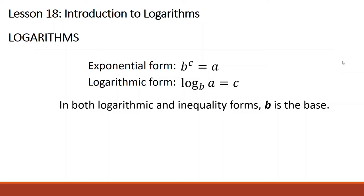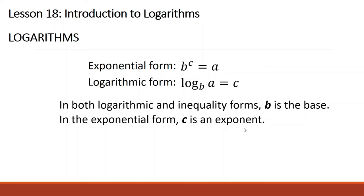In both logarithmic and exponential forms, b is always the base. In exponential form, c is the exponent. The result of the logarithm of a certain base is c, which also becomes the exponent in exponential form.